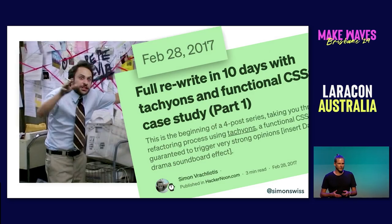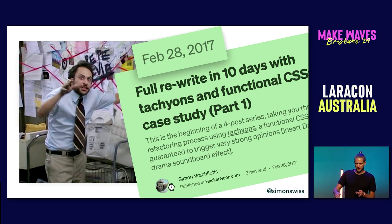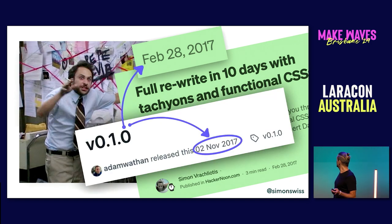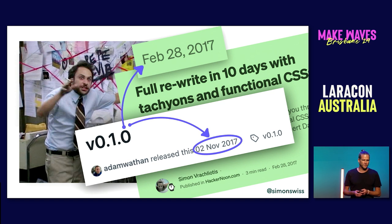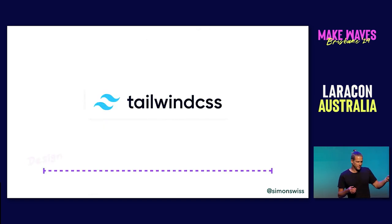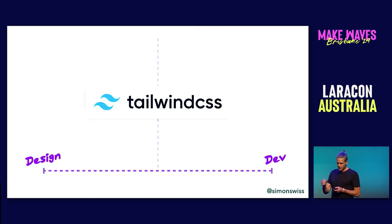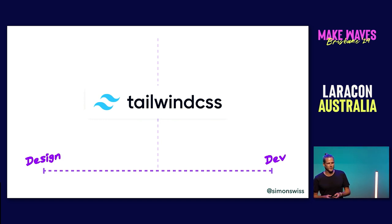If you know anything about me, you know that I'm slightly obsessed with utility-first CSS, and I've been talking and obsessing about it for quite a while. I've talked in 2018 in front of a Laravel crowd, and I've been talking about utility-first CSS since before Tailwind CSS was actually a thing. But today I want to do something different — I want to take a spectrum from design to dev and tell you why I think Tailwind CSS is the ultimate collaboration tool between designers and developers for cross-functional teams.